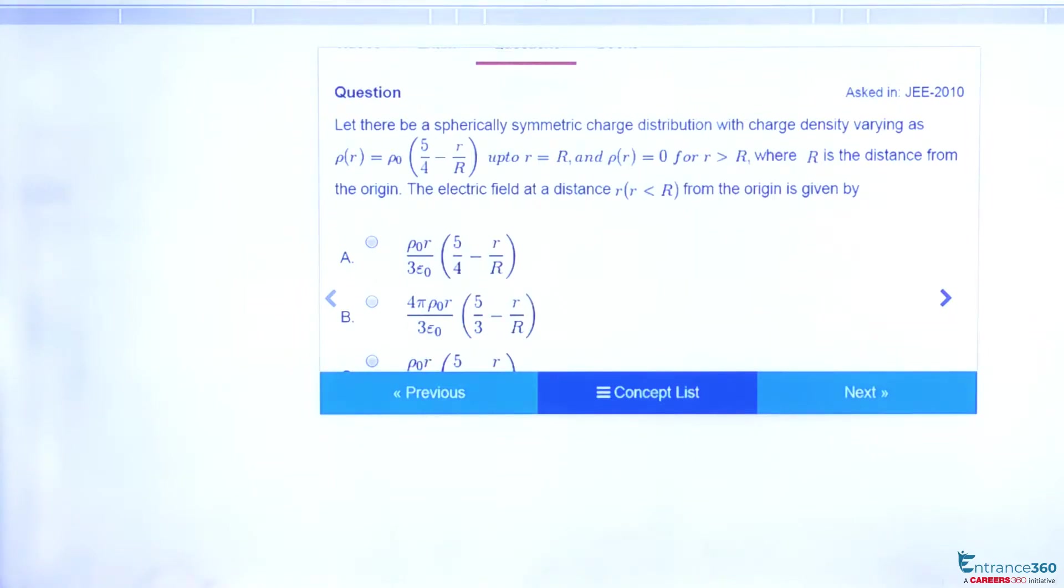The question says that we have a spherically symmetric charge distribution and the density is given as ρ₀(5/4 - r/R), and we have to find the electric field at a distance r which is less than the radius of the sphere.